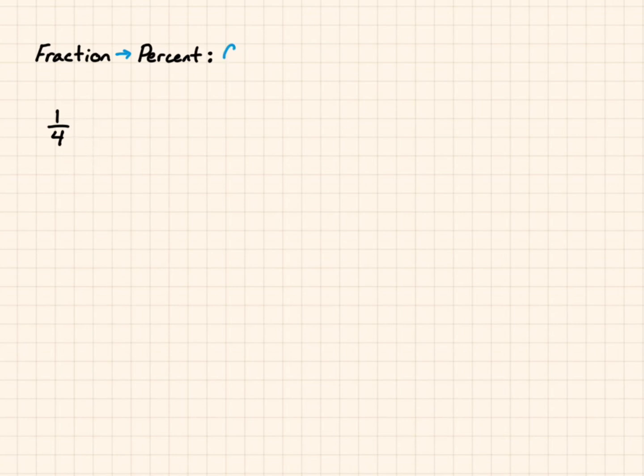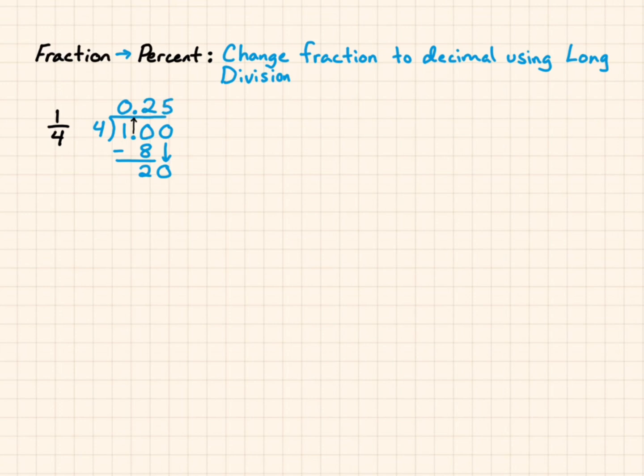For 1/4, change fraction to decimal using long division. The bottom number goes outside, the top number goes inside. 4 doesn't go into 1. You add a decimal and bring it up, and then add a 0. 1.0 is the same as 1, but I can see how many times 4 goes into 10. 4 goes into 10 two times. 2 times 4 is 8, I subtract, I get 2 as a remainder. I still have a remainder, so I'm going to add another 0 and bring it down. 4 goes into 20 five times. 5 times 4 is 20, I subtract, I get 0.